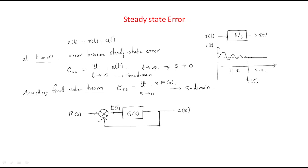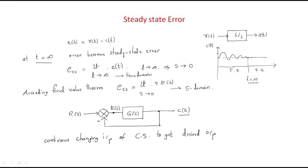Why do we monitor the error? We are continuously applying the input, taking the output, and analyzing these two. Wherever the error becomes zero, the system is perfectly operating. So for this system, we can state that continuous changing input — r(s) — is continuously given to the control system to get the desired output c(s).